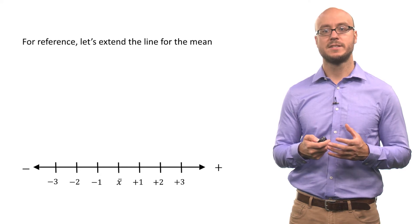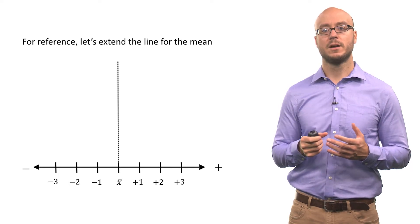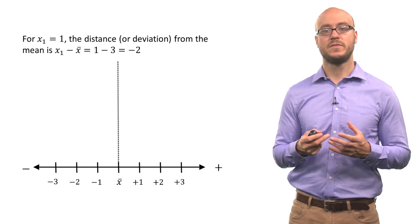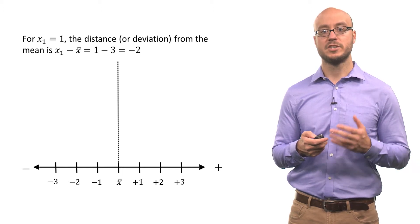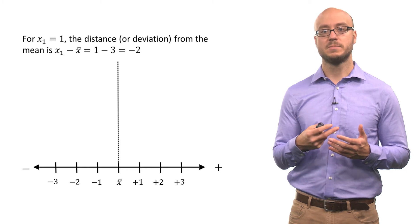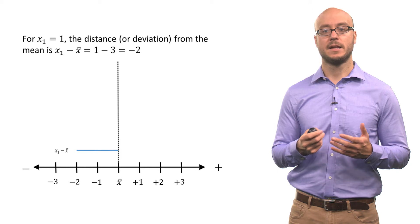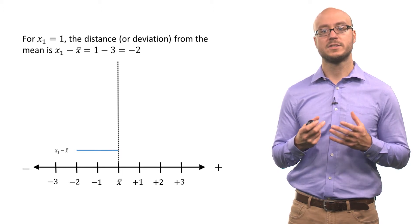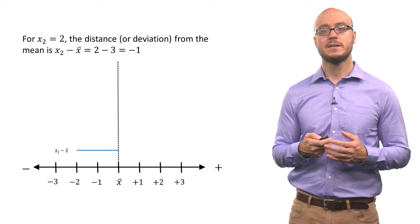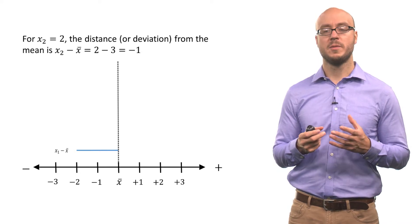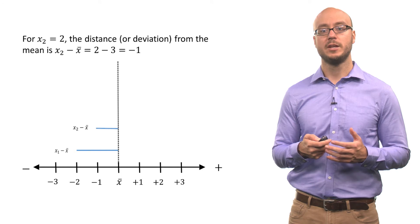As a reference, we extend a line for the mean and look at distances above and below for our observations. That first observation is negative two in terms of distance from the mean: observation 1 minus mean 3 equals negative 2, so it lies two values lower than the mean. Our next observation is 2, which is one value lower than the mean: 2 minus 3 equals negative 1.